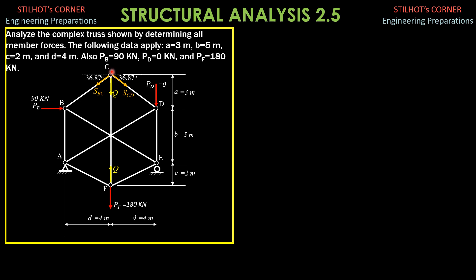We denote the stress in member CF as Q. Summation of forces Y equals 0, considering downward as positive. Take note that SBC equals SCD, so by symmetry, SBC sine of 36.87 degrees times 2, plus Q equals 0. From here, the exact value of SBC in terms of Q is negative 5/6 of Q, and that is in decimal negative 0.83333 of Q.